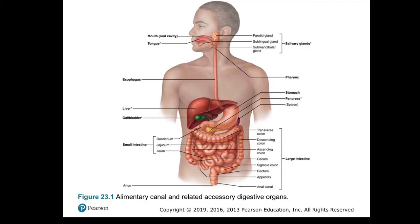Then we have the components of the large intestine: first the cecum, then the ascending colon, the transverse colon, the descending colon, the sigmoid colon — which is the lower portion of the colon — the rectum, and the anal canal and anus. We can also see the liver and the gallbladder, which stores bile, as well as the pancreas, which is underneath the stomach.